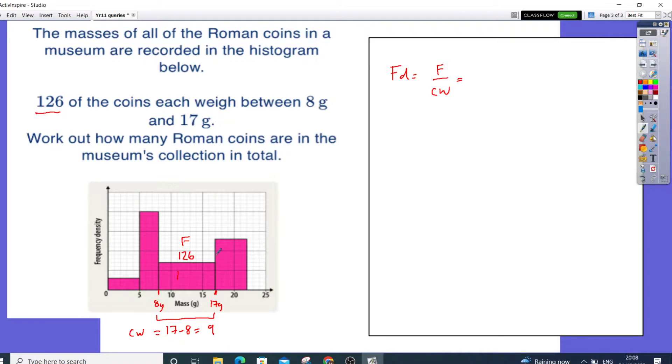So in this case, the frequency was 126. That's going to be divided by 9. Now, you can just quickly do this in your calculator. 126 divided by 9 is 14. So that tells me that going along here, being careful, that's going to be 14.